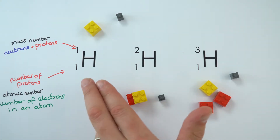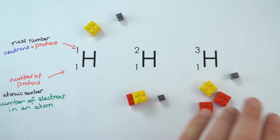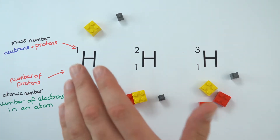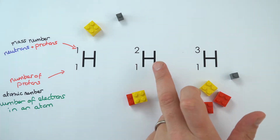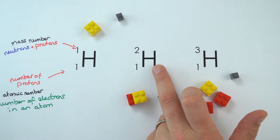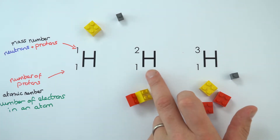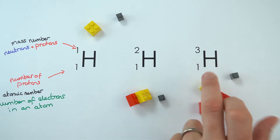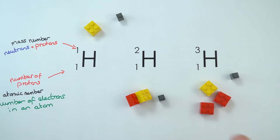So these are all the different isotopes of hydrogen that exist. We've got normal hydrogen, which is what most of the water and the hydrogen-containing parts of your body are made of — this is our bog-standard hydrogen. We've also got deuterium, which has two things in the nucleus, and tritium, which has three. So these are just some of the common isotopes of hydrogen.